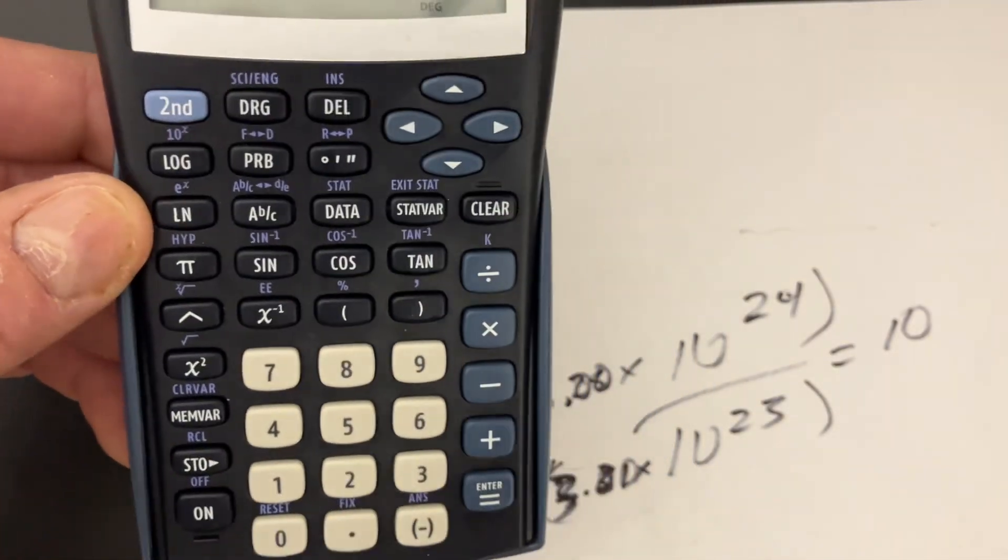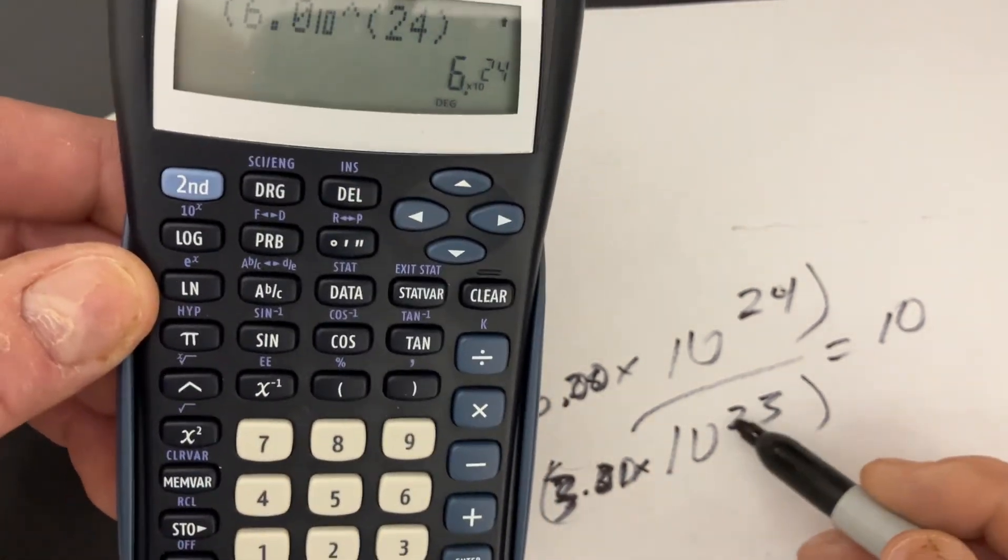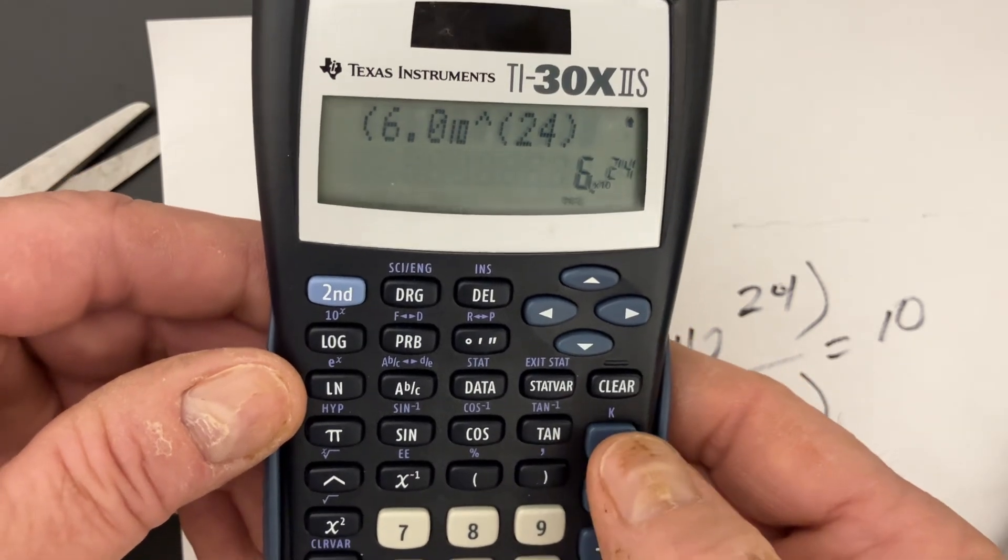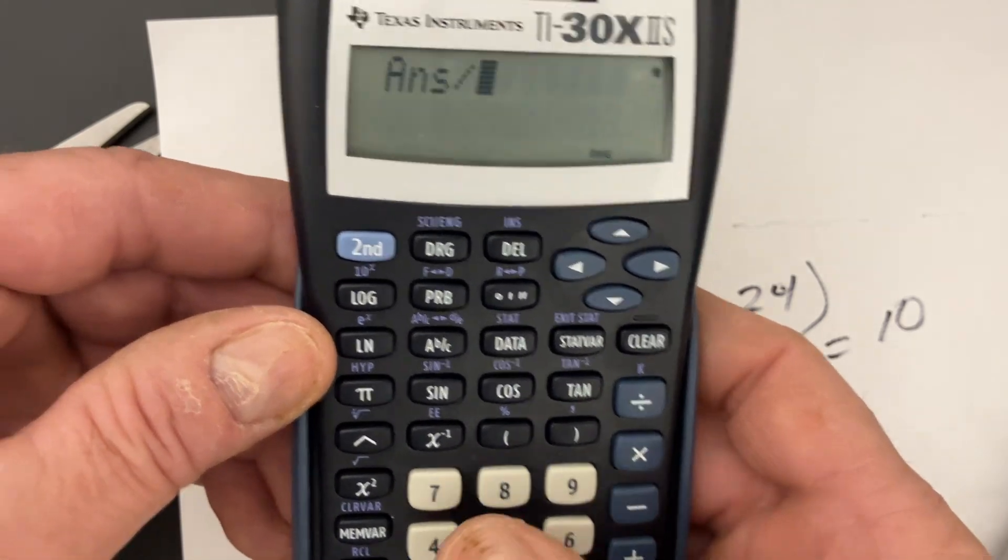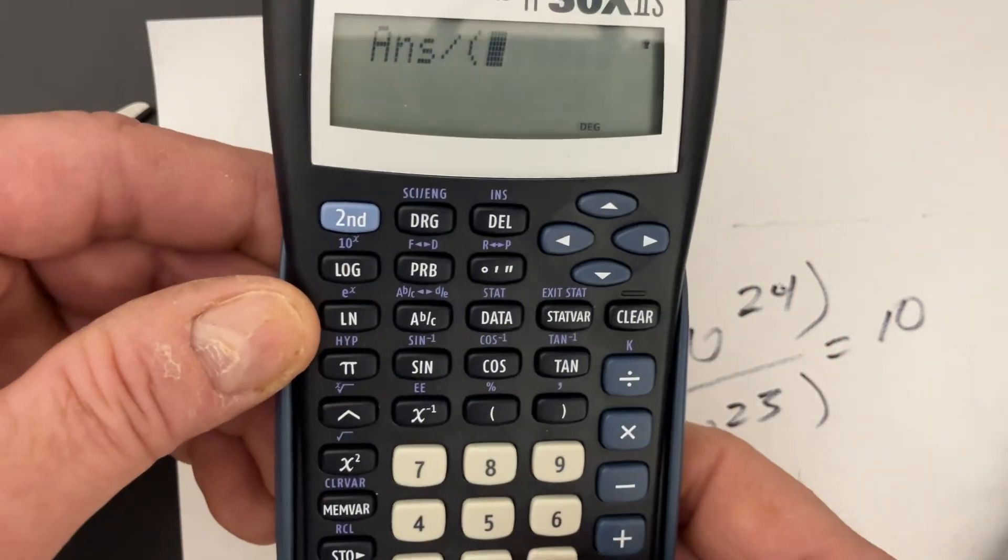But one thing you have to worry about is when you use the scientific notation to divide this by, you have to use that bracket again. So I just always use brackets. I'm going to hit divide, hit bracket again, start it off by having a bracket, and then have 3.0.